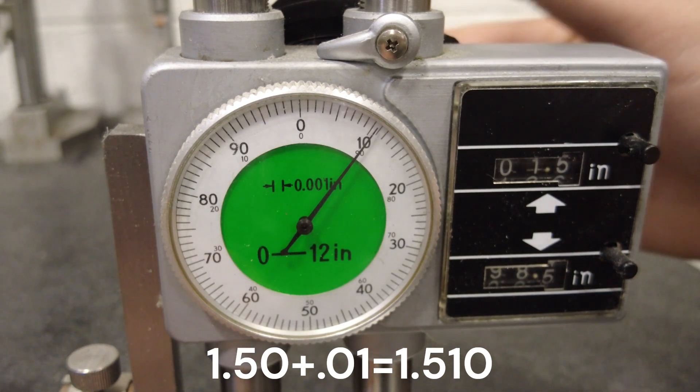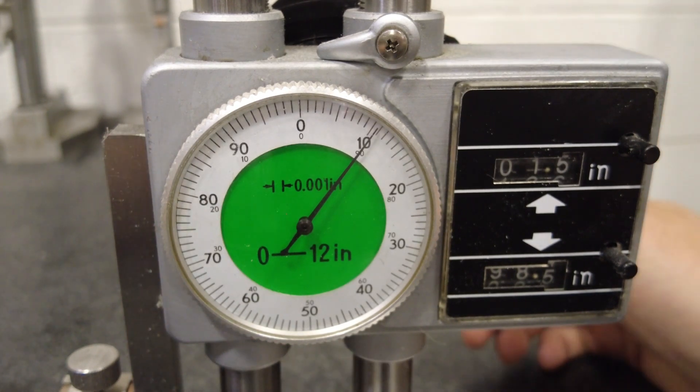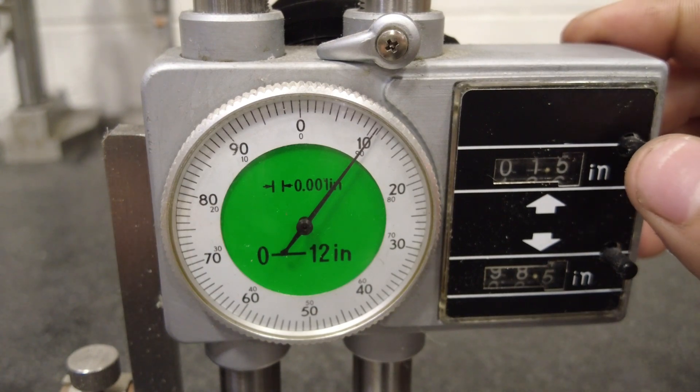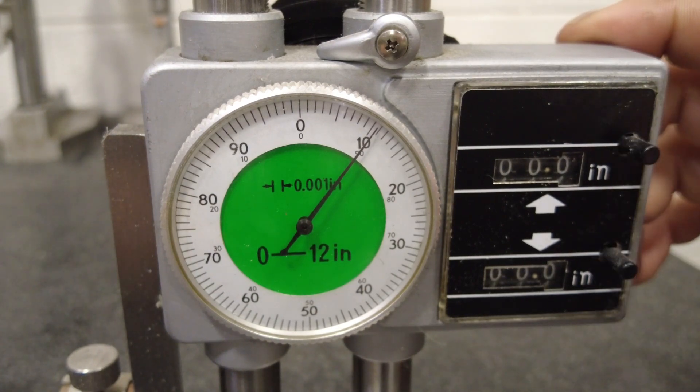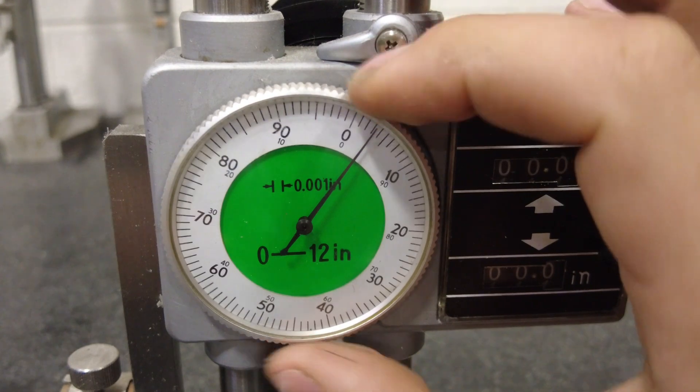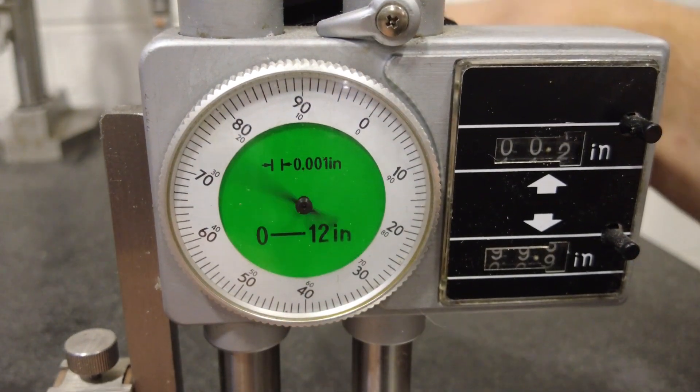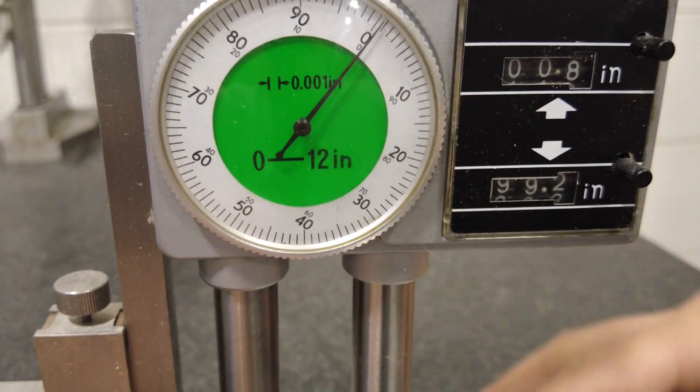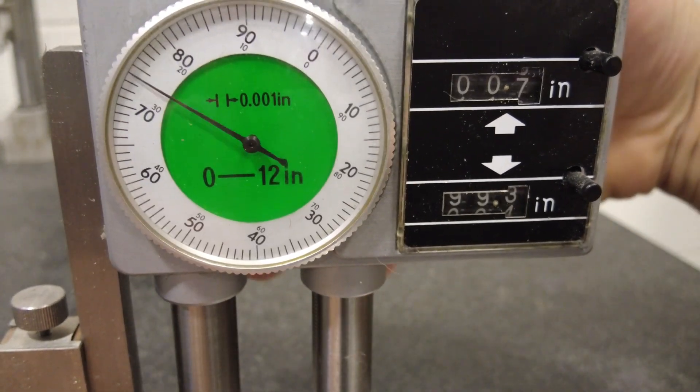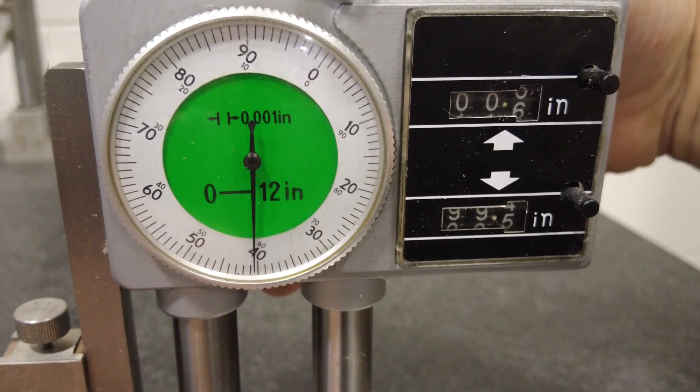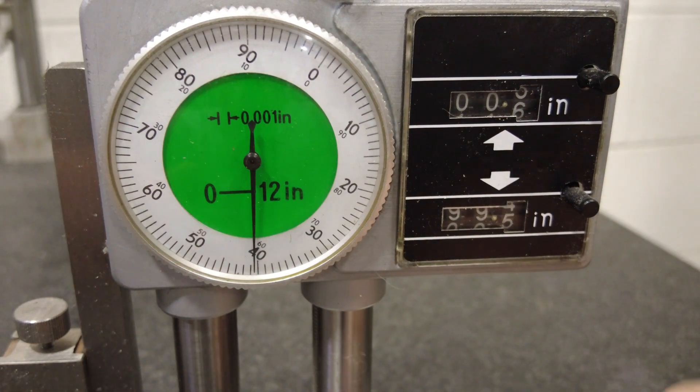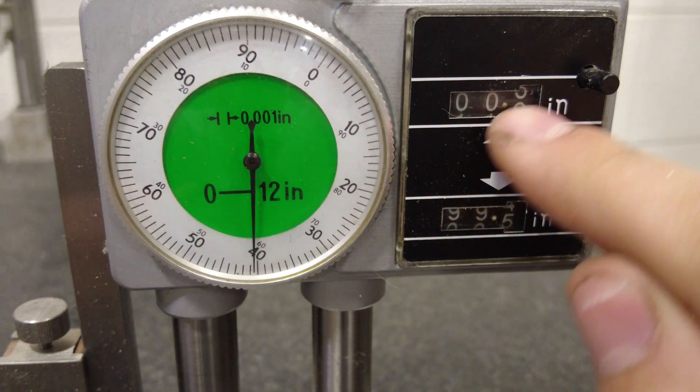Now if we want to measure the distance between the two heights we just measured, we can zero it here using those buttons, and also zero it on the dial here. Then jogging this back up to our first measurement and back down, we can see the difference between those two is 0.54.